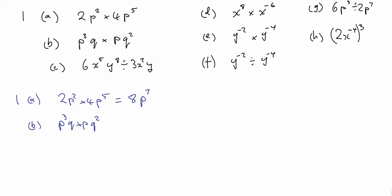p cubed times p, q times q squared: collect up the p's and q's. That would be p cubed times p, times q times q squared, giving p to the power of 4, q cubed.